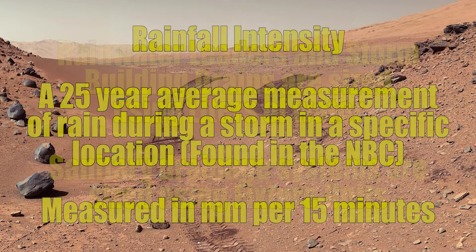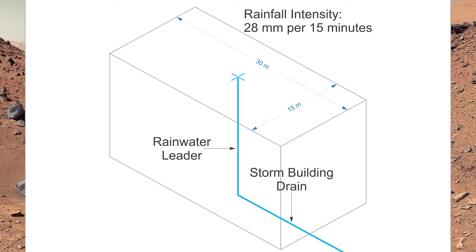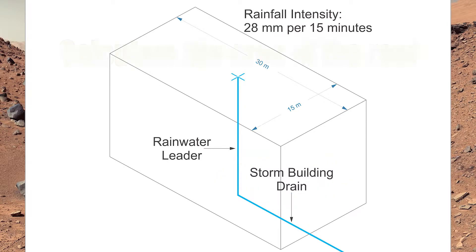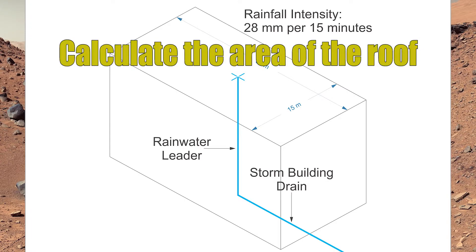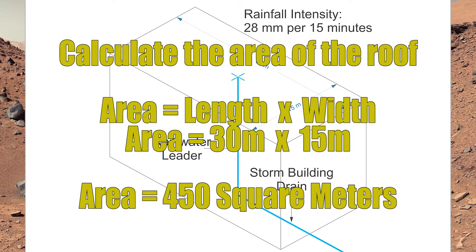We find the rainfall intensity value in the National Building Code. I have a building here with one flow control roof drain right in the middle. The building has a roof that is 30 meters by 15 meters. I have a vertical pipe going straight up and down in the middle of the building — that is called a rainwater leader — and when it turns the corner and goes horizontal, we call that the storm building drain. The area of this roof is simply length times width: 30 meters times 15 meters equals 450 square meters.